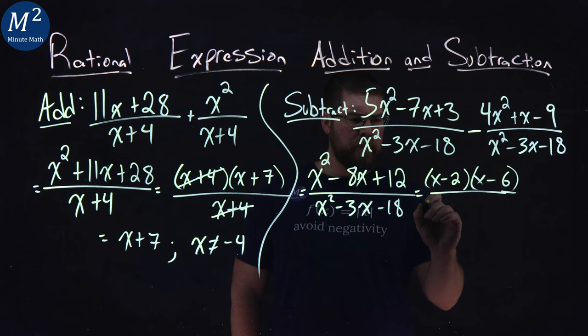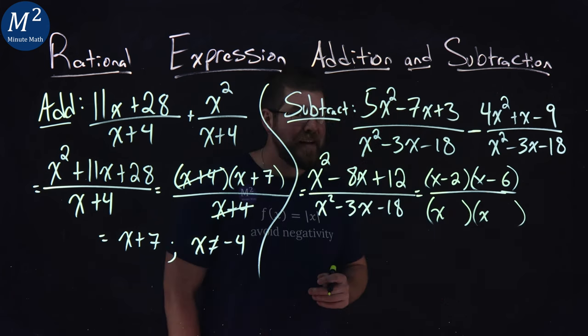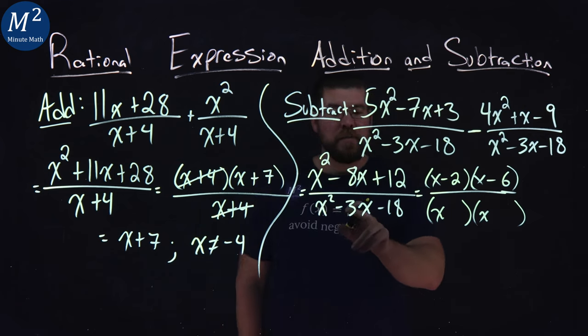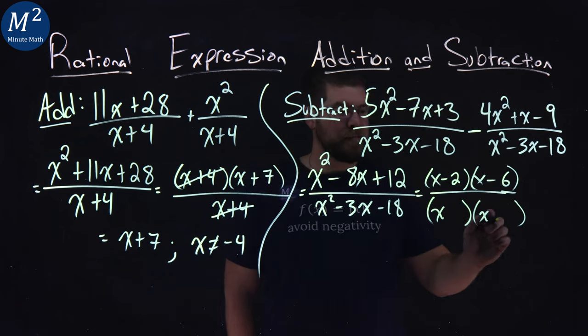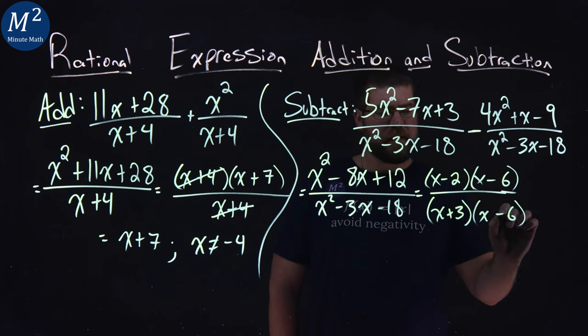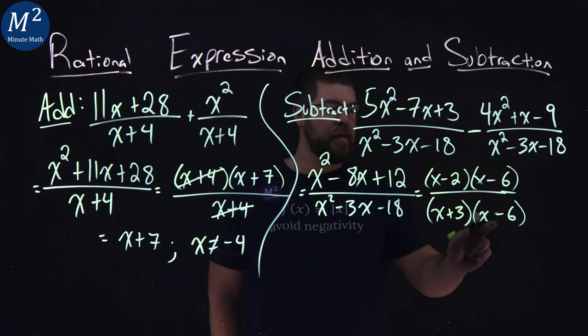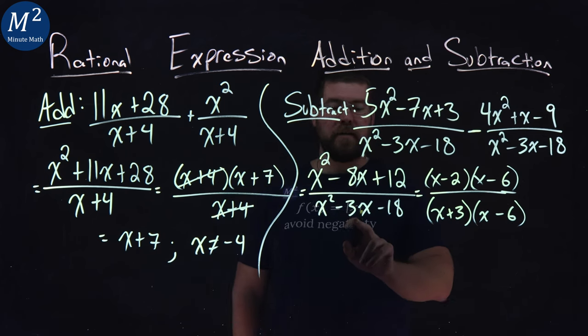What about the denominator here? Same idea, we're going to ask the same question. What two numbers multiply to be negative 18, but add to be a negative 3? And I'm seeing a positive 3 and a minus 6. Negative 6 times positive 3 is negative 18. Negative 6 plus 3 is negative 3.